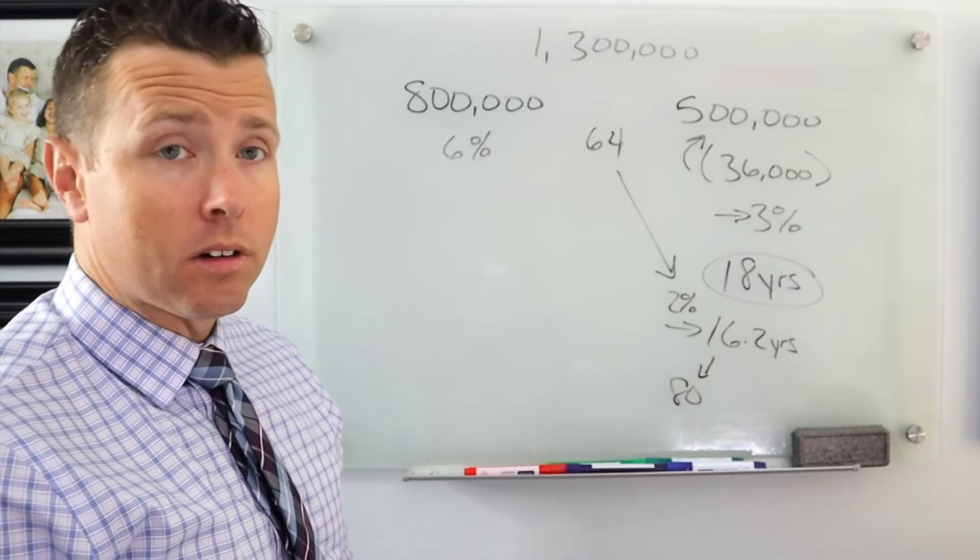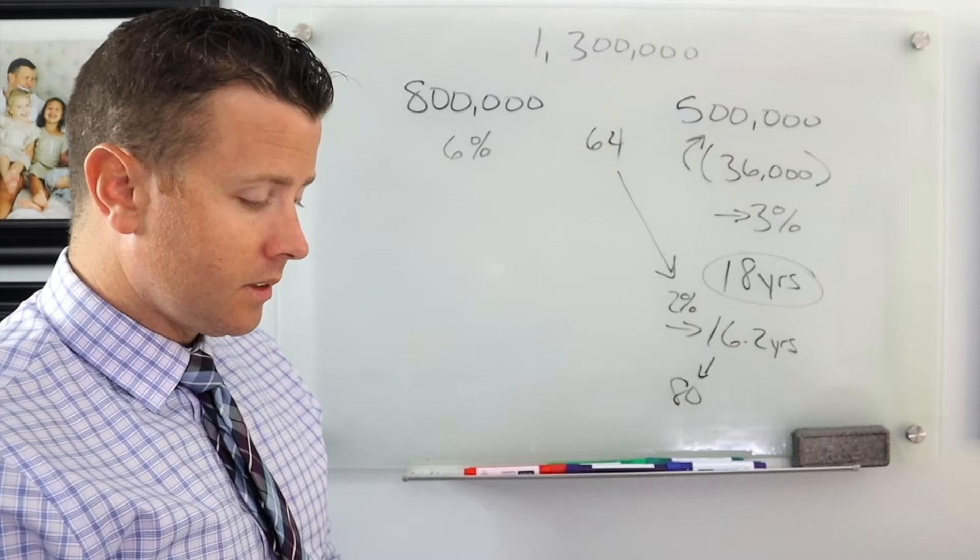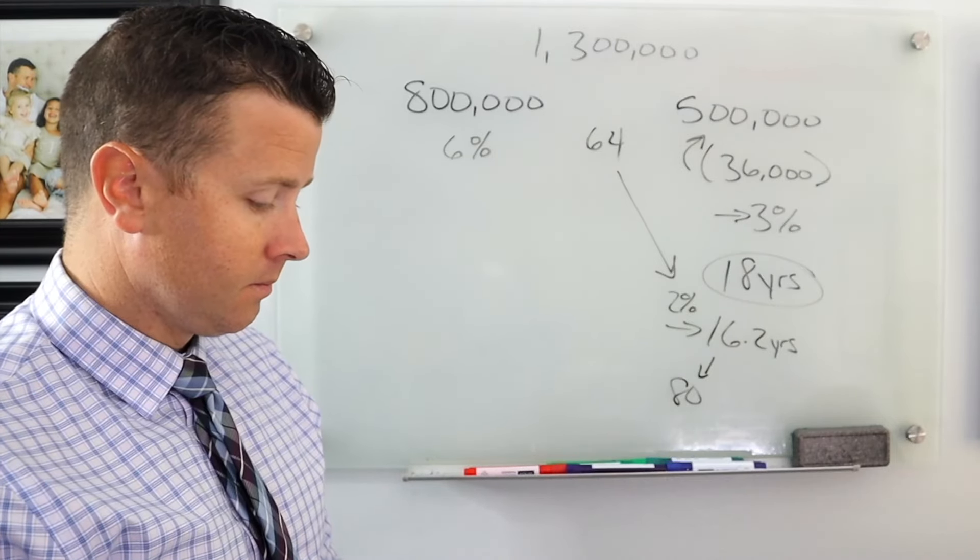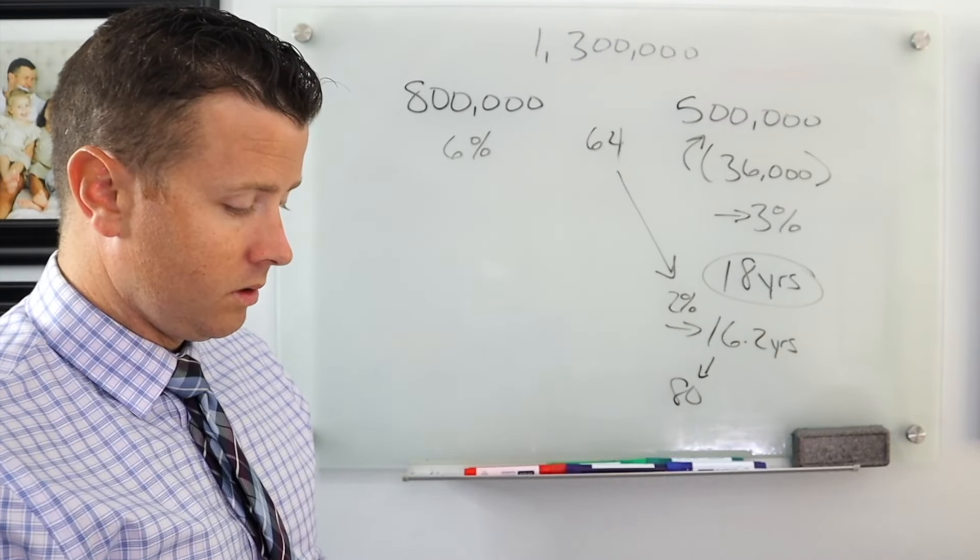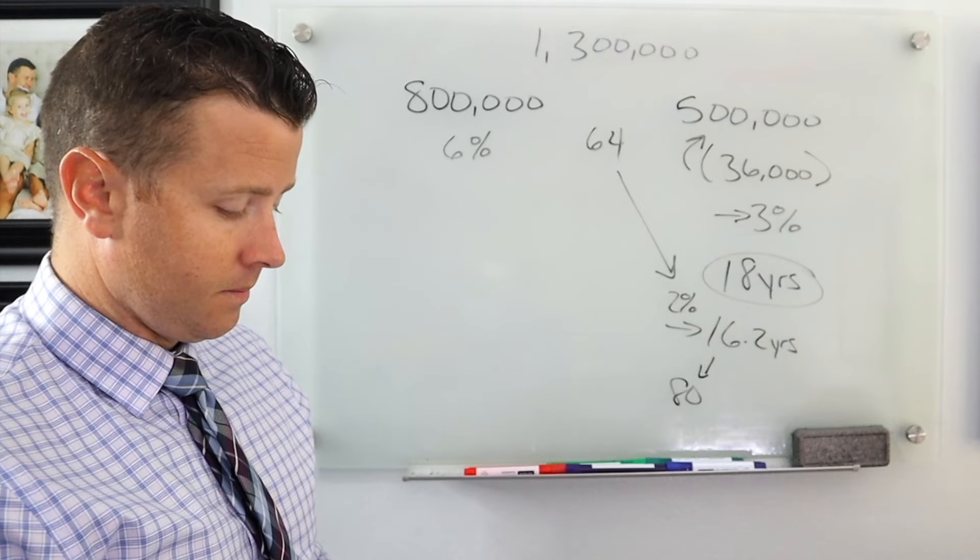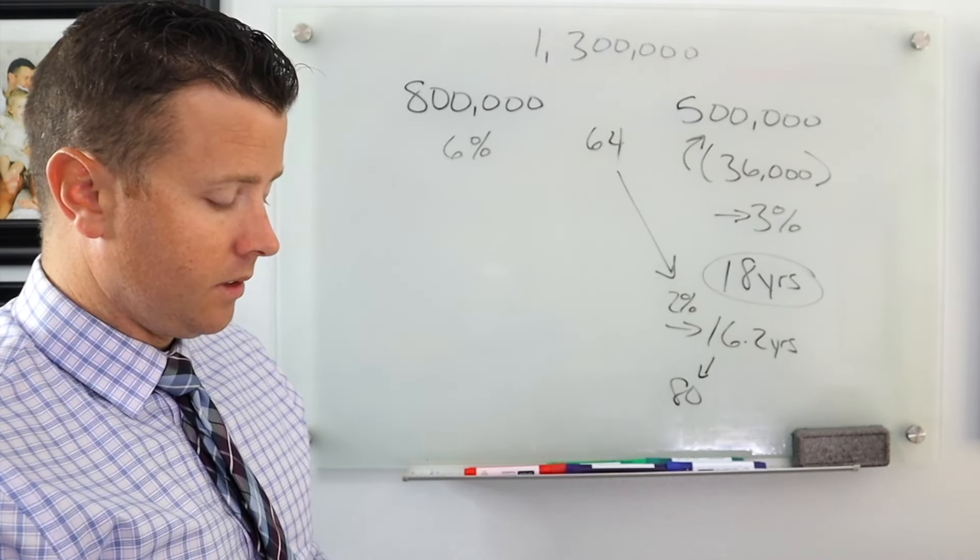So $800,000, let's clear all the calculations. $800,000 growing at 6%. Let's do this for 16 years because that's how long before that other side is going to last.